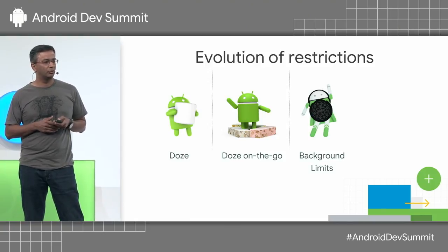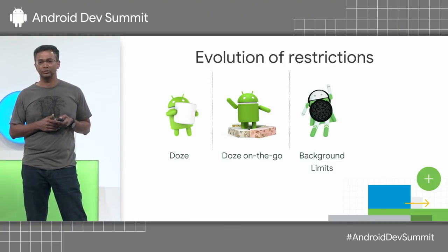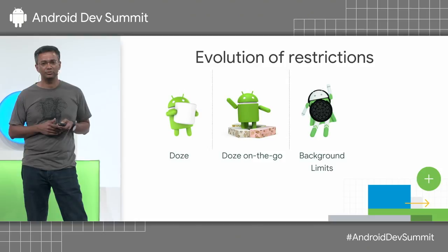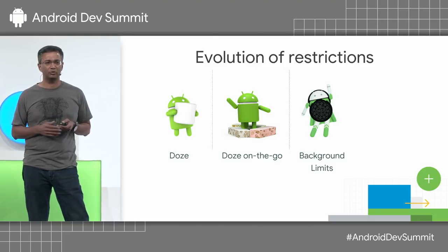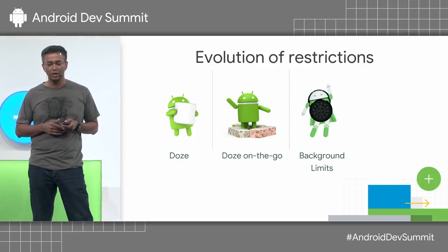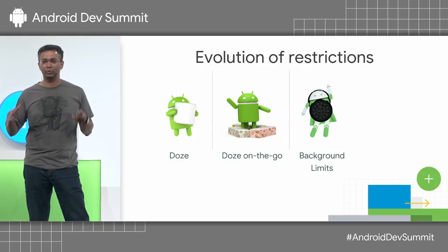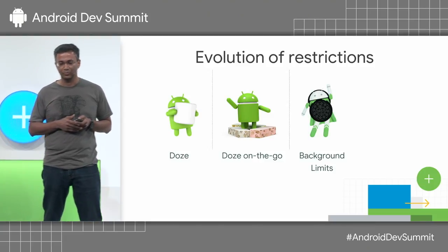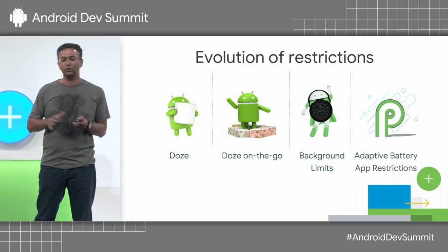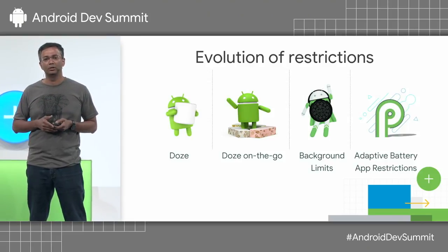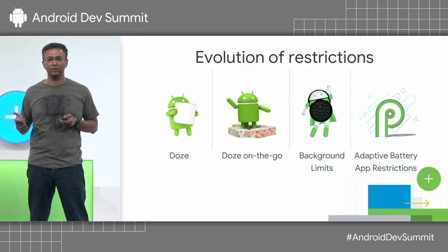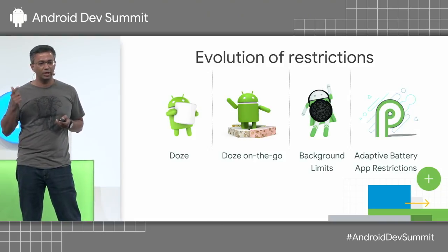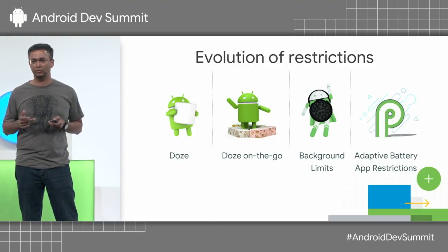You're probably all familiar with the Oreo restrictions on background services, as well as limiting the number of implicit broadcasts that you can wake up to. And as of this month, everyone needs to target Android Oreo or above, otherwise you can't publish on the Play Store. But we'll focus more on what's new in P: adaptive battery, app restrictions or background restrictions, and we've also made some improvements to Battery Saver.